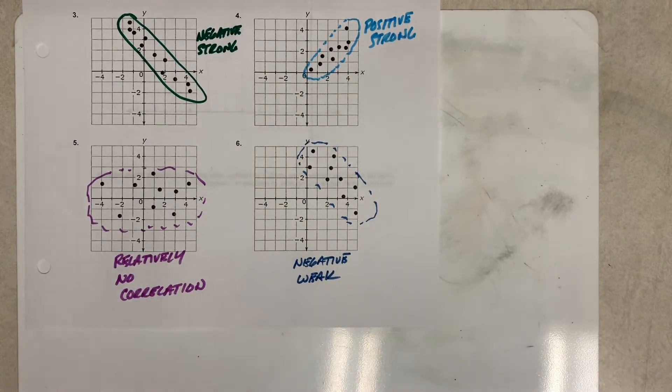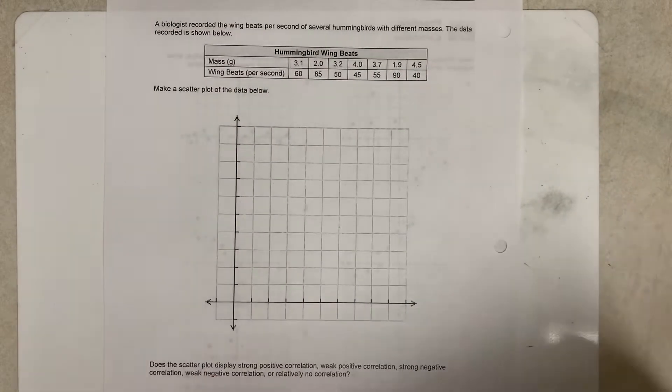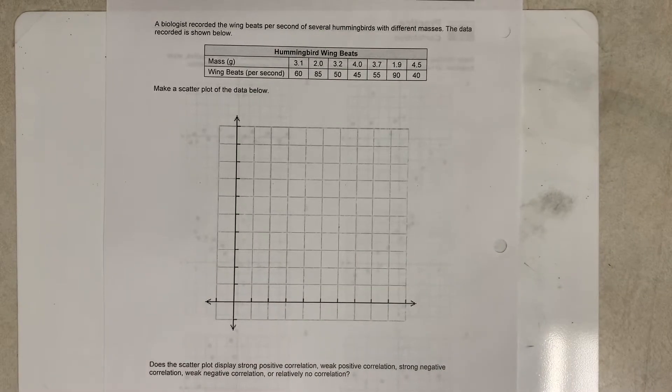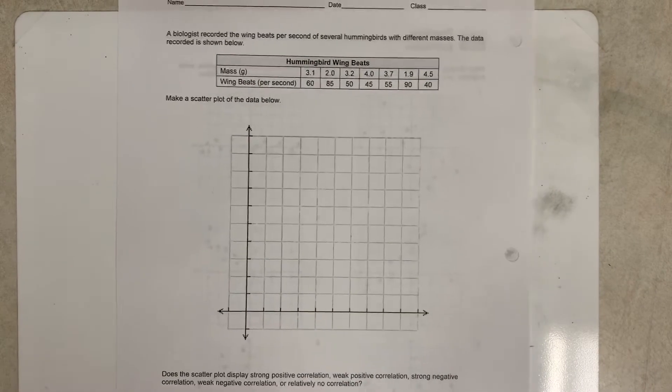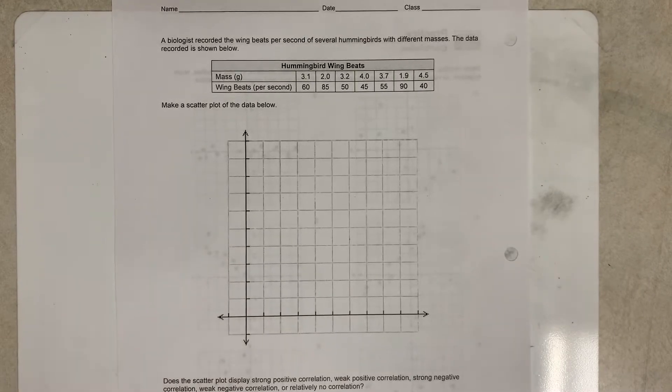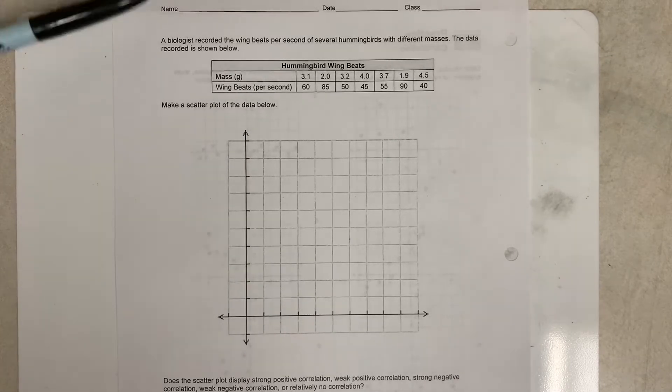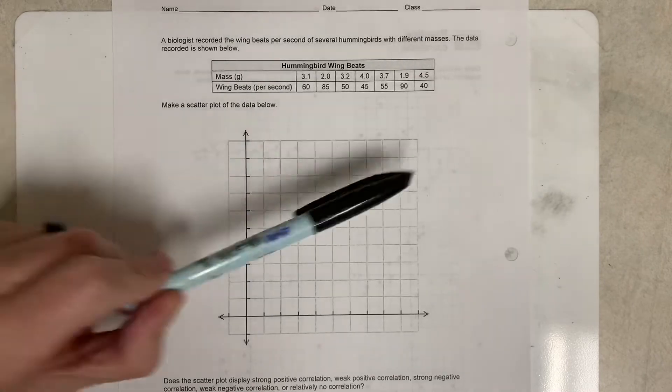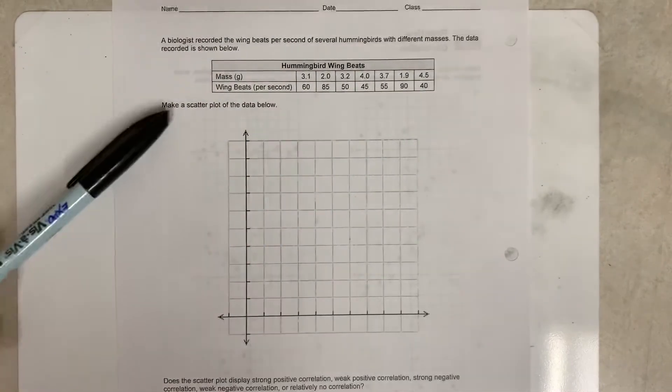All right, so now that we've looked at correlation and we kind of see what it's all about, now we're going to look at a problem that we have. This one, we read the question—this looks more like what our EOC looks like. This one says a biologist recorded the wing beats per second of several hummingbirds with different masses. The data recorded is shown below, and we have some data in this table.